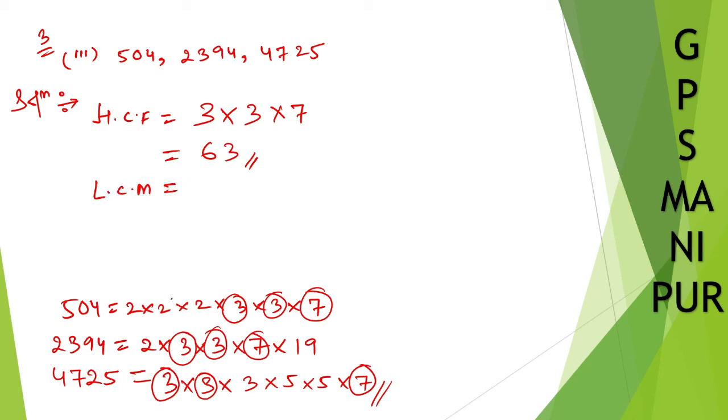LCM. Let us find out LCM. First let us start with 2. There are two 2s, so 2 into 2 into 2. 2 is completed. 3 is common: one, two, three 3s. Another 3 is common. Any more 3s left? Here is one more 3. So copy this one also, into 3.